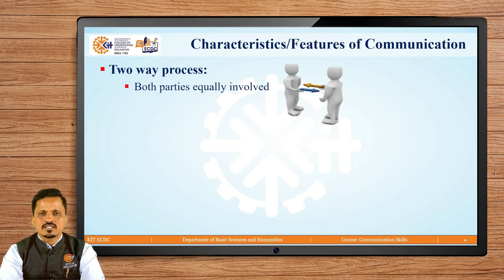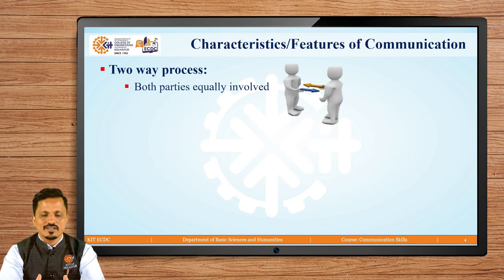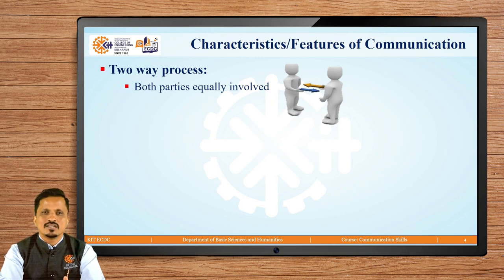Like every object, every thing has its own characteristics, communication also has its own characteristics. For example, communication is always a two-way process — both parties are equally involved. You cannot say communication is successful when only the speaker is speaking and the receiver is not listening. There should be someone to give, tell, and inform, and in the same way, there should be someone who would like to know and learn.